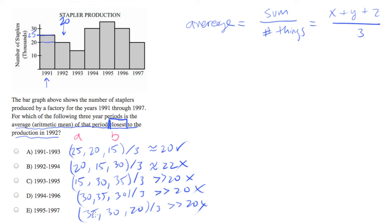If we come down to answer choice E, 35 is above, 30 is above, and 20 is dead on, so there's no way this is going to average to 20. Same thing with D: it's above, above, above. That's always going to average to something above 20.